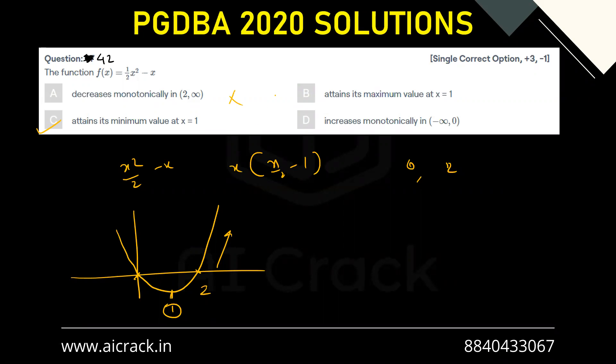Attains its maximum value at x = 1, but it's attaining a minimum value, so that is not correct. Increases monotonically in (-∞, 0), so it's actually decreasing, so again that is not correct.